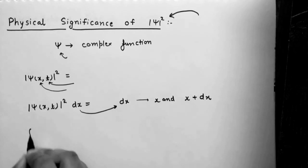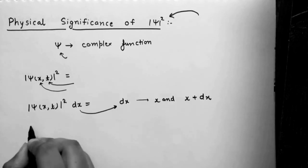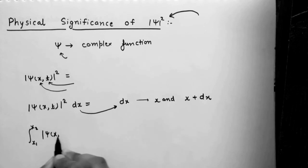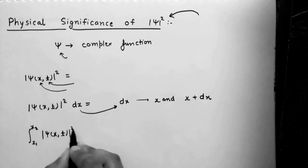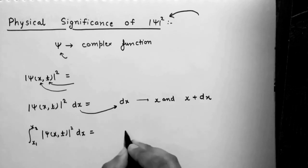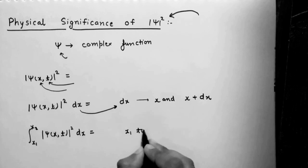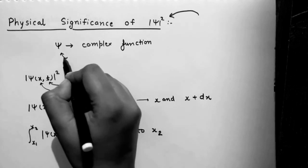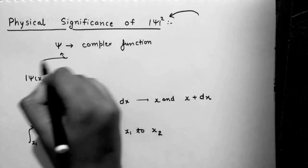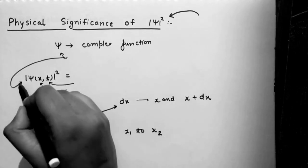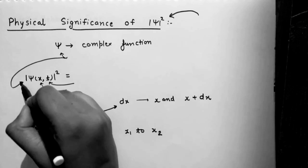Now if I integrate this function with limits x1 to x2, then it represents the probability to find the particle in a region between x1 and x2. So psi doesn't have any physical significance, but mod of psi squared does have physical significance and it represents the probability to find the particle.